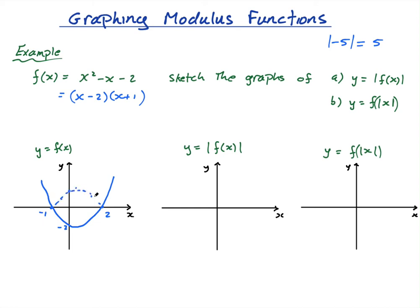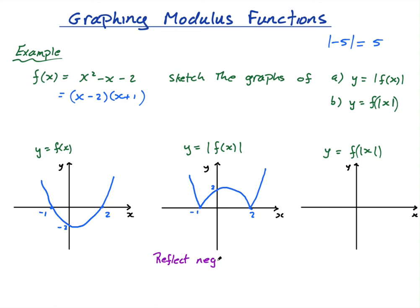What happens is the negative part gets reflected in the x-axis. The positive part stays exactly the same — it still has a root at negative 1 and at 2, still comes down and goes up, but instead of going underneath the x-axis, those values get reflected up. The rule to remember: reflect negative y-values in the x-axis.